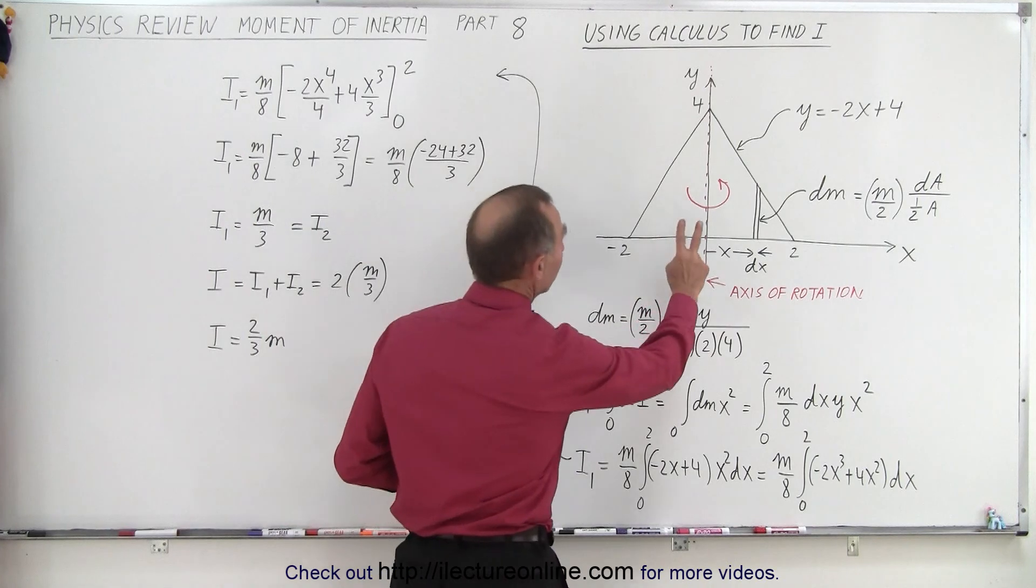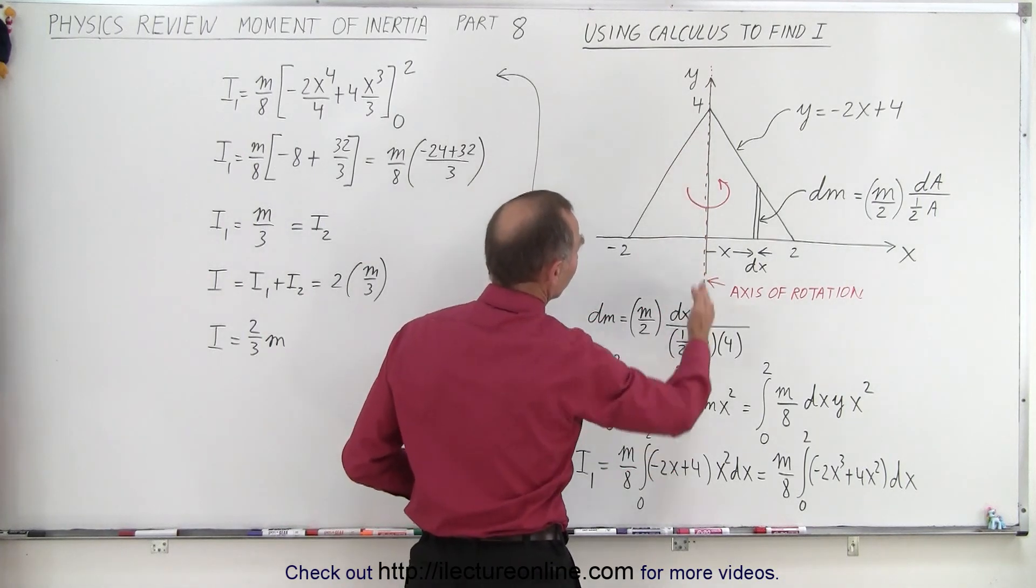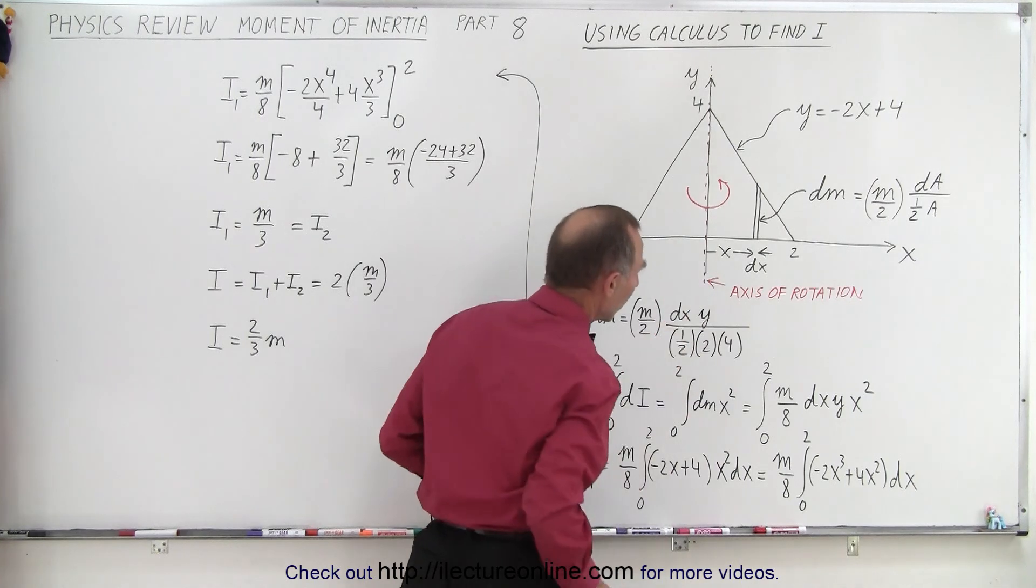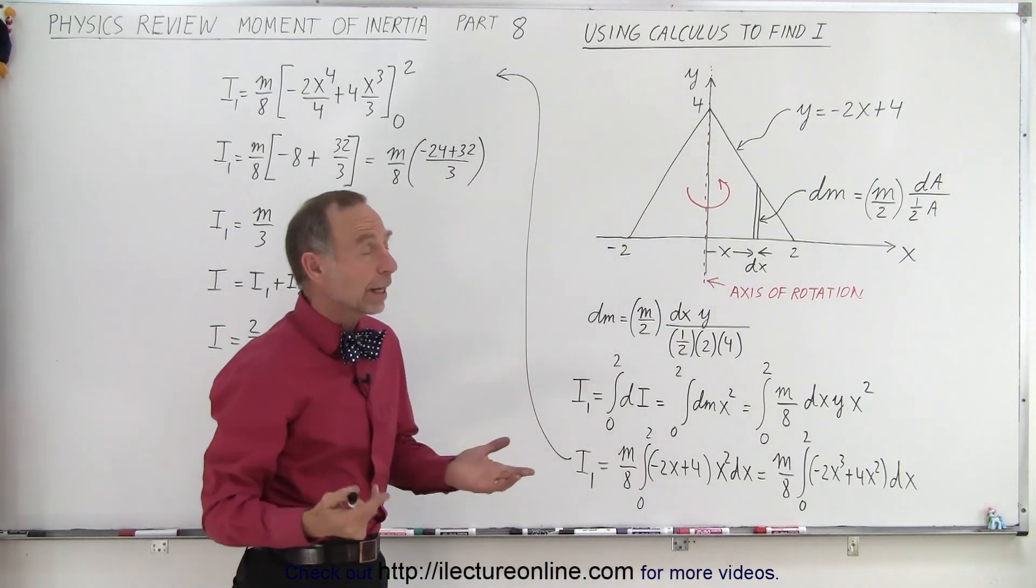Let's assume that this triangle is rotated, rotating about a central axis that goes up and down the y-axis, so this whole thing is rotating about the y-axis. How to do that?